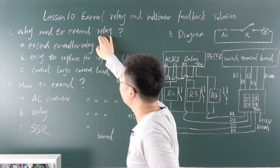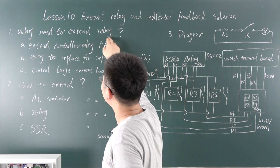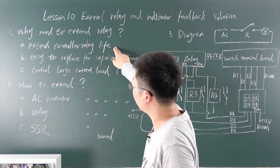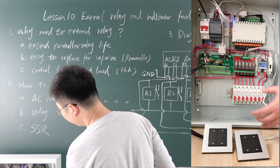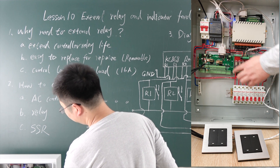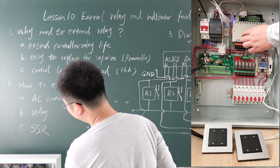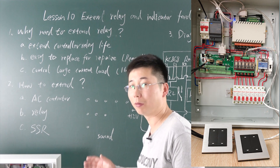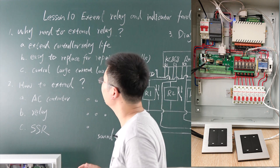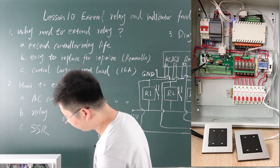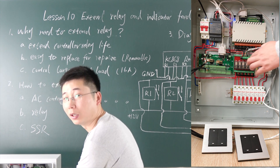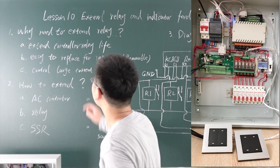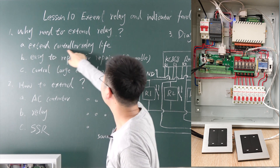Why extend the relay? Because extending the relay extends the controller relay life. Your power load — all the large current — goes through this external relay and not through the internal controller relay. So the relay inside the controller box carries only very small current. The large power pulse will impact the external relay, protecting the internal one.